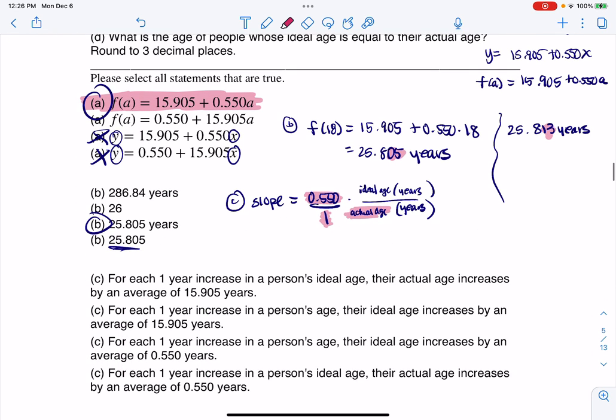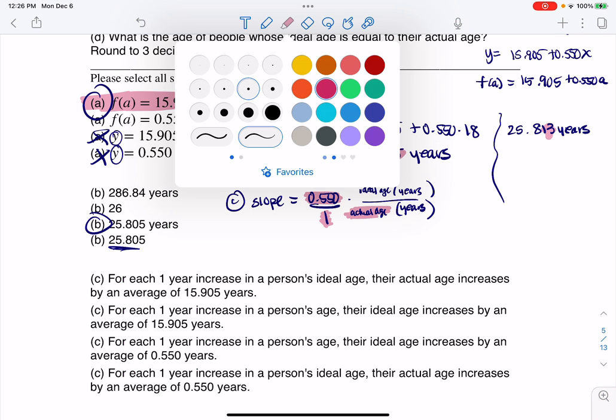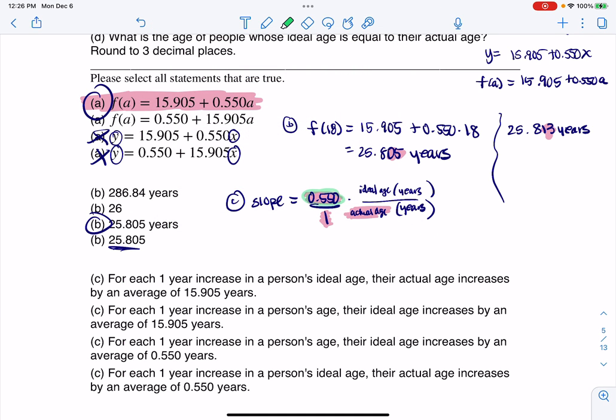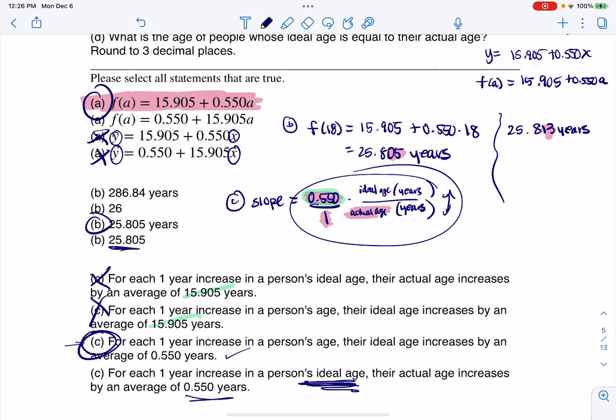So let's take a look at these options. Now, keep in mind the slope, as we said, and I'm going to change colors, it's 0.550. So I can rule out just on sight, I can rule out this answer and this answer because they're dealing with the y-intercept. So it's not either of these, which is fine. So we have for every one year, I'm going to read this one, for each one year increase in a person's age, their ideal age increases by an average of 0.550 years. And that's exactly what we were saying here. You can see that the next option is a little off because they say for every one year increase in your ideal age, then your actual age increases by 0.550 years. So they had these flip-flopped. So here is our correct answer.